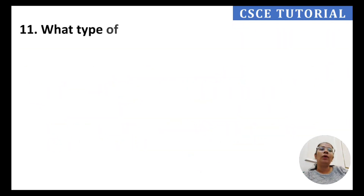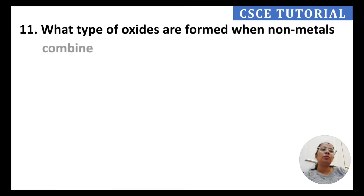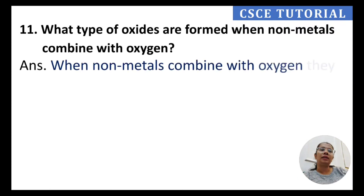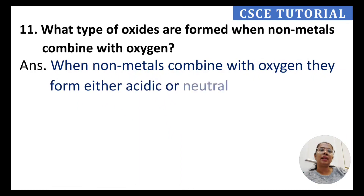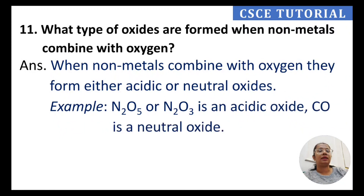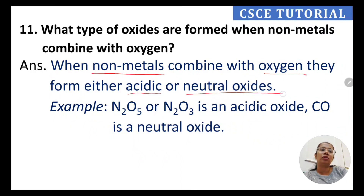Question 11: What type of oxides are formed when non-metals combine with oxygen? Non-metals form either acidic or neutral oxides. For example, carbon dioxide (CO₂) is an acidic oxide, and carbon monoxide (CO) is a neutral oxide.